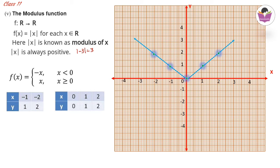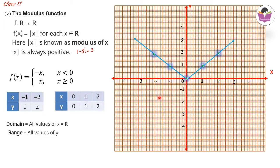The domain of the modulus function is all real numbers ℝ, since x can take any value. The range is all non-negative real numbers — that is, all positive real numbers and 0 — because the output of a modulus is always non-negative.